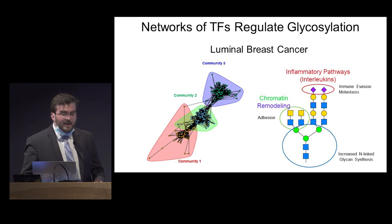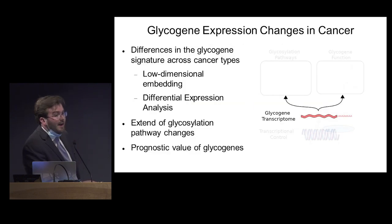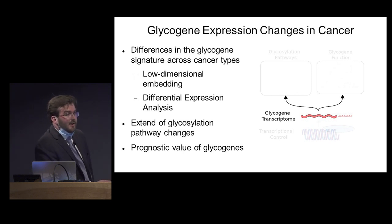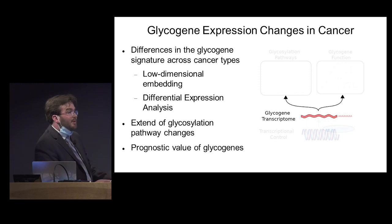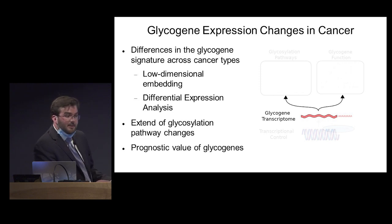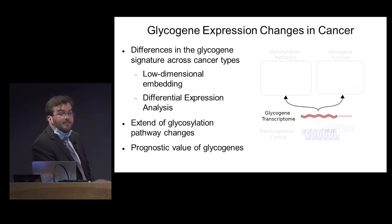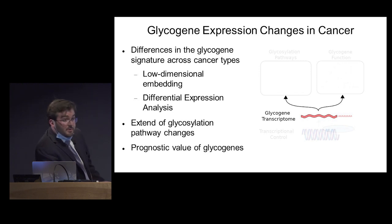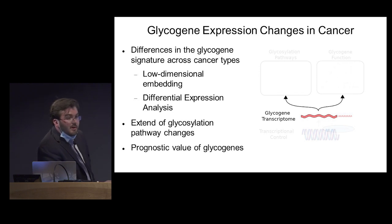Moving on to the next part of my analysis — understanding how glycogene expression can become dysregulated in cancer — we wanted to understand how the glycogene transcriptome is altered in cancer and what types of glycans we can expect. This transcriptomic data can help us predict potentially what types of glycans to expect in cancer, which is very important for biomarker discovery and the development of drugs. In order to do this, we took several approaches using low-dimensional embedding, differential expression analysis, as well as developing a prognosticator-type machine learning model.